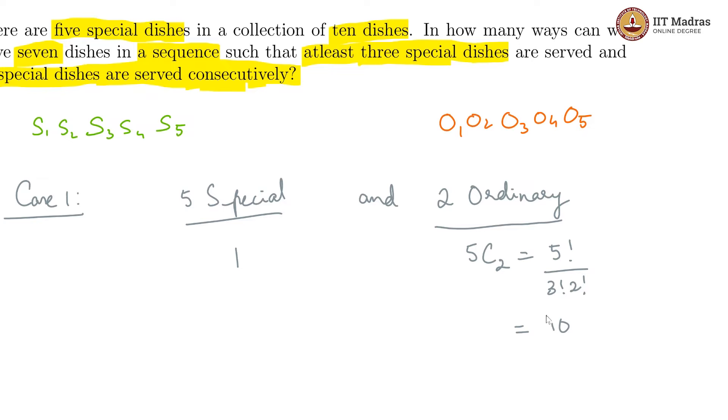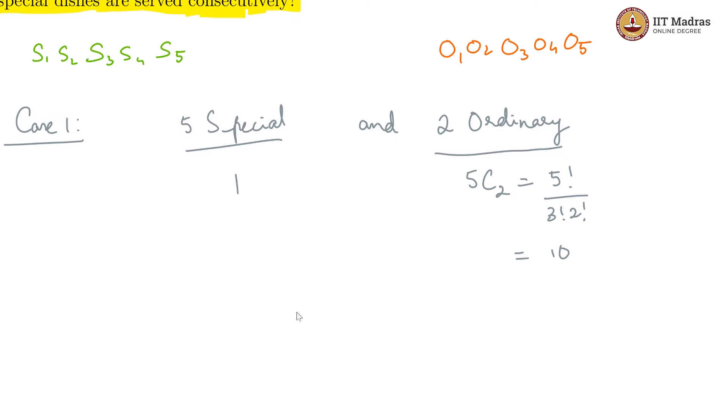And here you can do 5C2 which is 5 factorial by 3 factorial into 2 factorial which gives us 10. In 10 ways we pick 2 ordinary dishes and in one way we pick 5 special dishes. So now we have our 7 with us. However, these 5 put together, they make 1 block, 5 special. Other than that we have 2 ordinaries. In effect it is like we are dealing with 3 entities which is basically 2 ordinary and the 1 sequence of 5 special dishes.